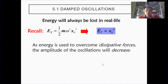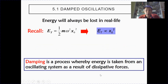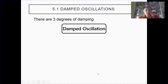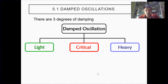As a result, the amplitude of the oscillation will decrease. So damping is a process where energy is taken from an oscillating system due to the effects of dissipative forces. There are three degrees of damping: light damping, critical damping, and heavy damping.